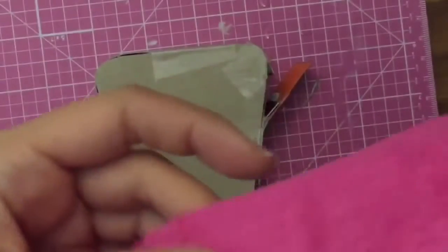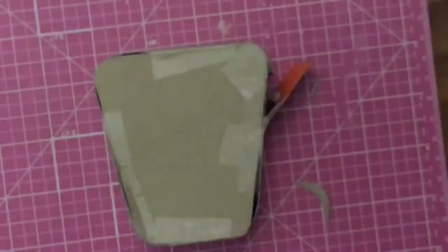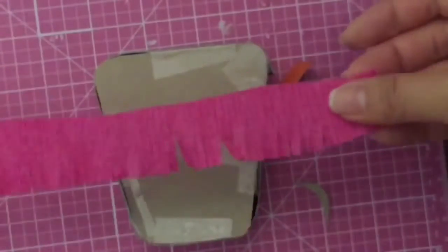This pinata is now ready for some fringe. I'll show you how to make the fringe in a simple technique that does not require any special tools. You do want to use crepe paper if you have it, but if you don't, you can certainly use tissue paper. Crepe paper is a little easier to work with because it is stretchier.